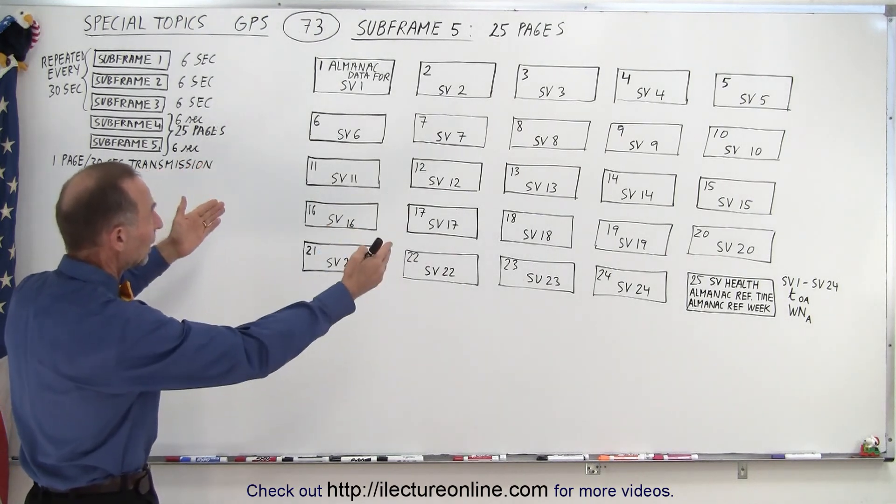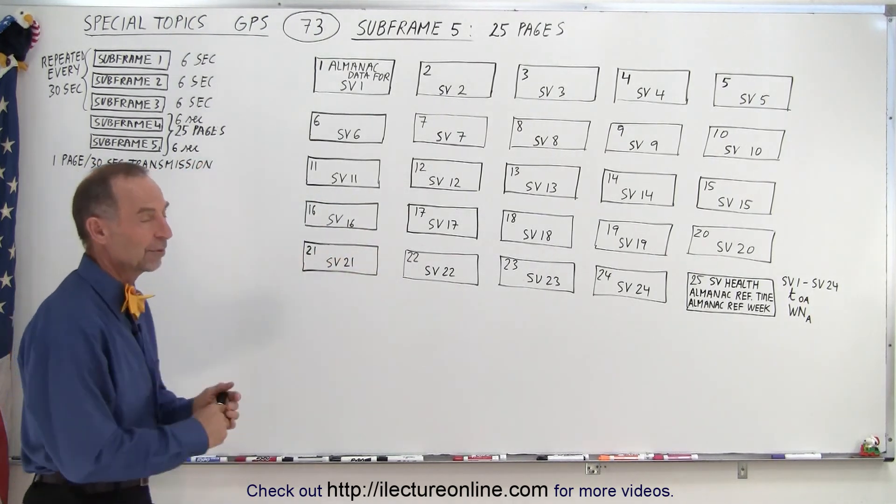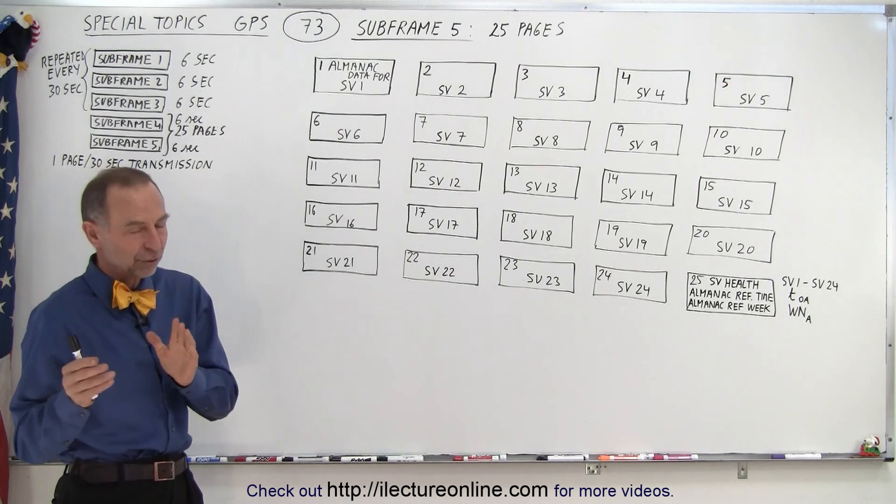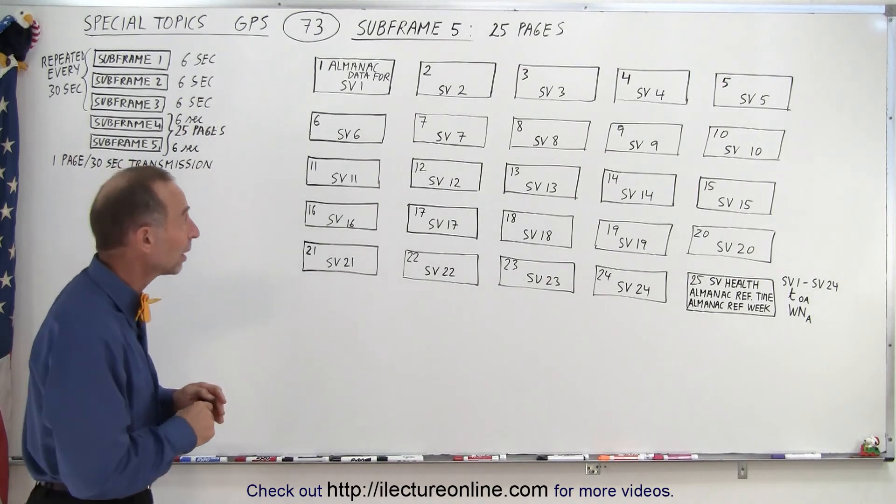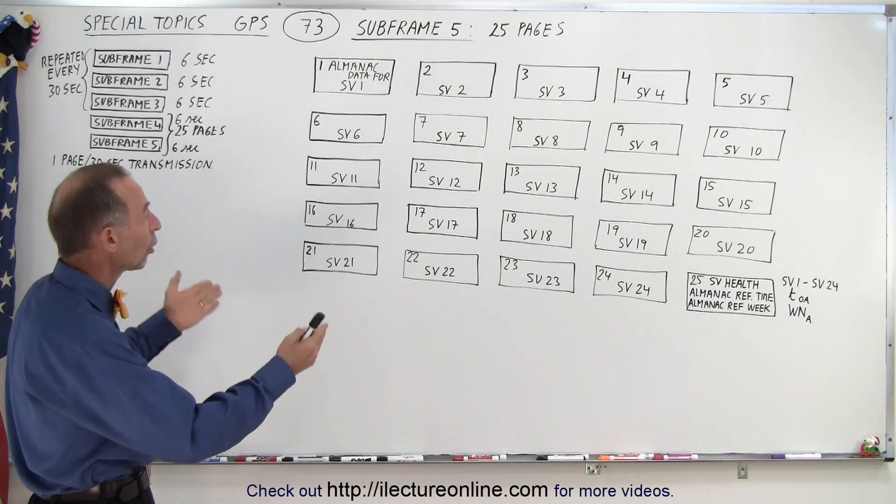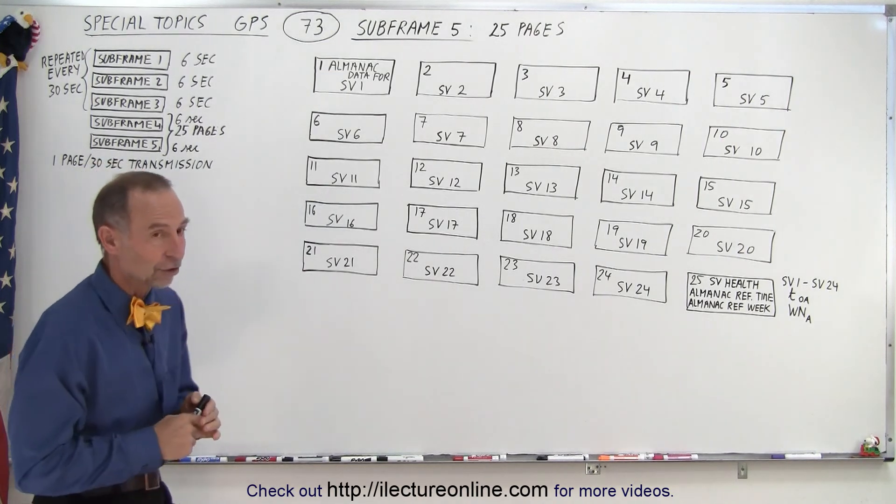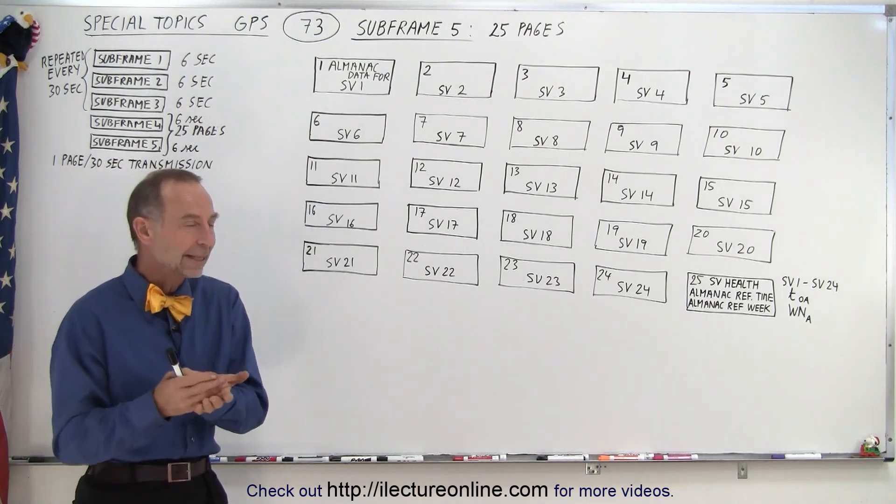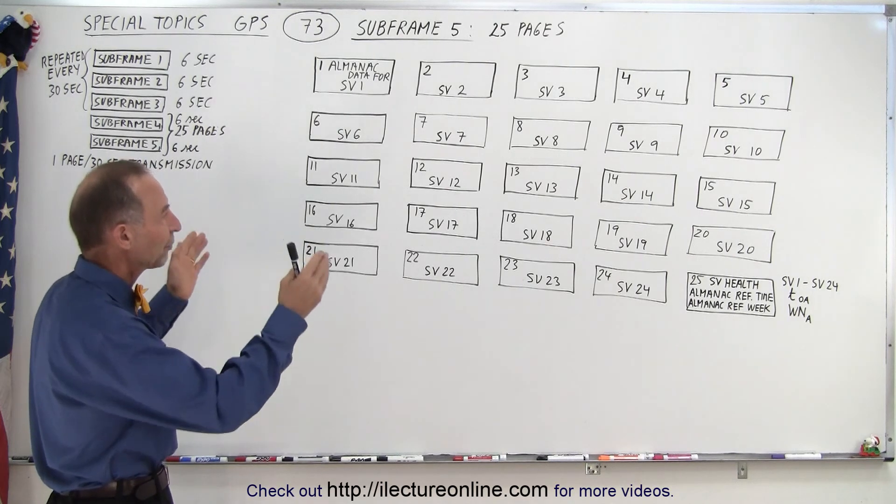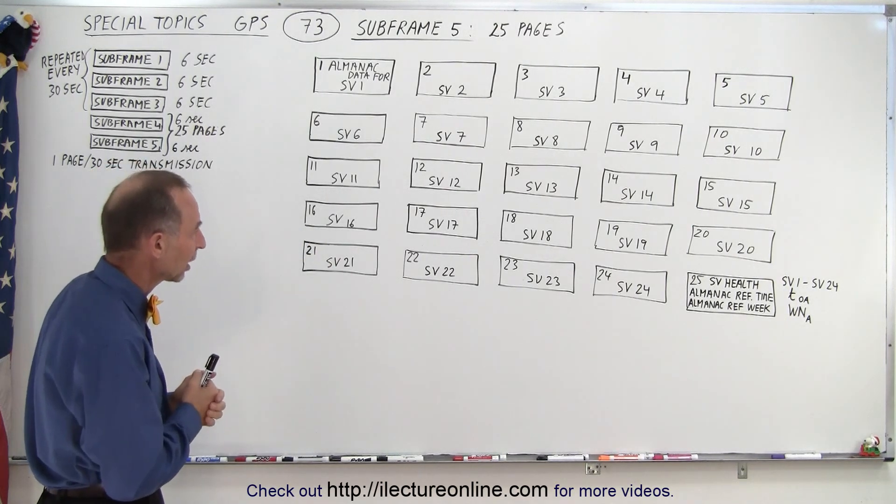Here's pictorially the 25 pages of subframe five. Now subframe five is much more simplistic than subframe four in that 24 of the 25 pages all have the exact same data structure. They contain the almanac data of the first 24 satellites in the constellation.